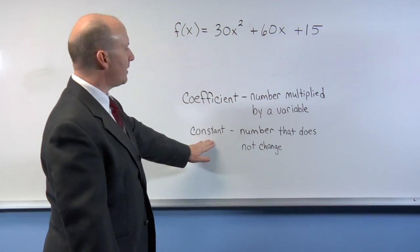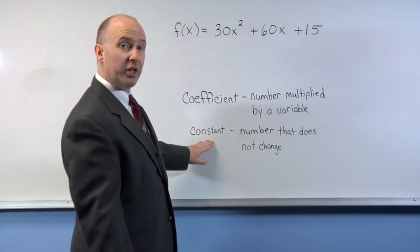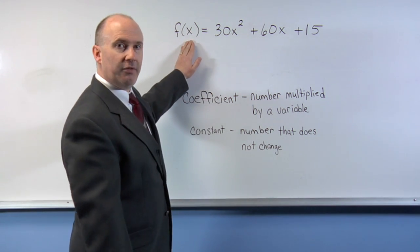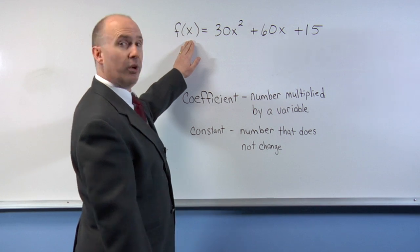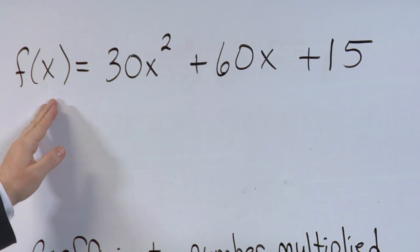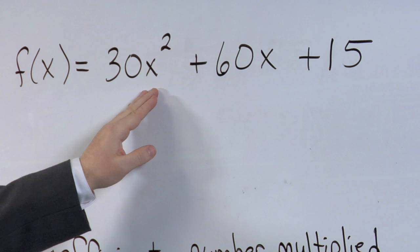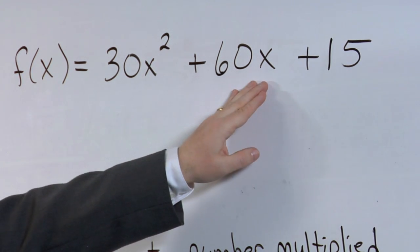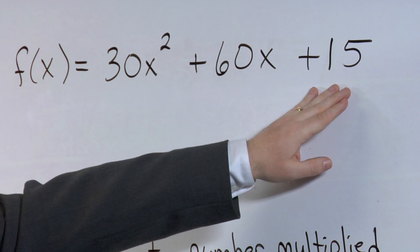In fact, a constant is a number that does not change depending on what the variable is. For example, if I plug in the value of 0 for x, and I substitute 0 for x all the way through, this value would change, this value would change, and this value would not change.